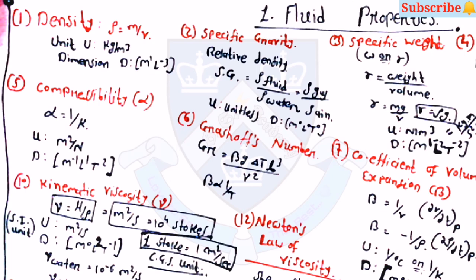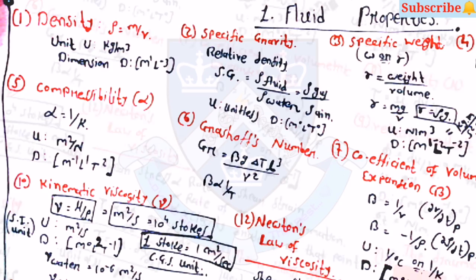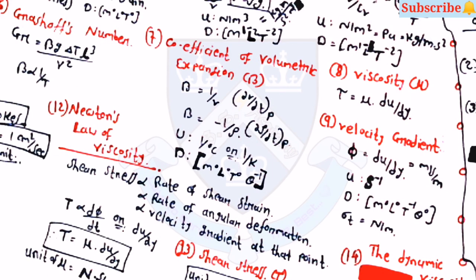Grashof number Gr equals beta g delta-T into L-cube by mu-squared, where v is proportional to 1 upon T. For the coefficient of volumetric expansion, beta equals 1 upon v into del-v by del-T at constant pressure, and beta is also equal to minus 1 upon rho into del-rho by del-T at constant pressure.